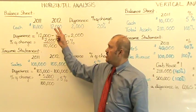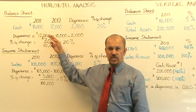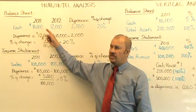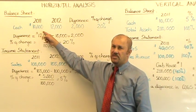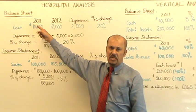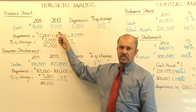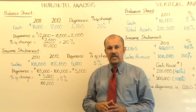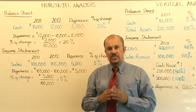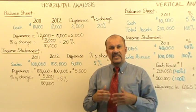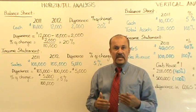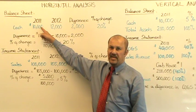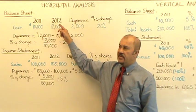First of all, you would need two years of information. In this example, I have the cash balance at $10,000 for the year 2011 and $12,000 for the year 2012. So given this information, step one would be to calculate the increase or decrease in your cash from 2011 to 2012.